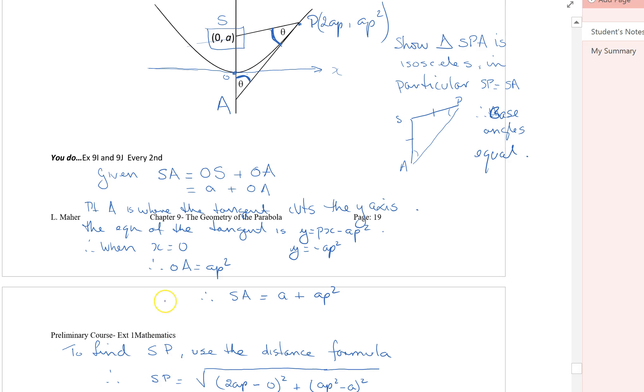Now I focus on finding SP. SP, I've got two points. I've got the coordinates of those points. So I'm going to use the distance formula between two points. So the distance is the square root of (x2 minus x1) squared plus (y2 minus y1) squared.